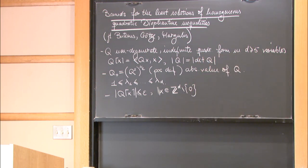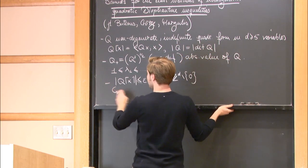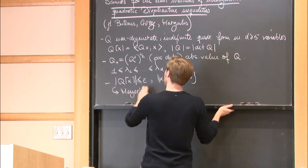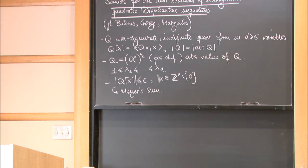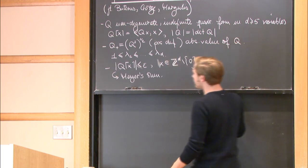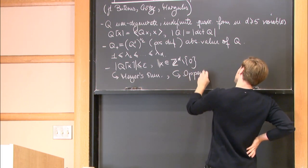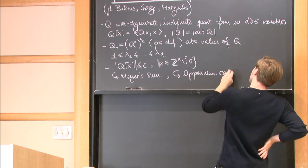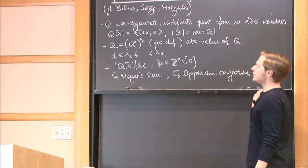The reason this question makes sense is in the integral case we have Meyer's theorem, which tells us that any indefinite integral quadratic form in d ≥ 5 variables represents 0 non-trivially. We also have the Oppenheim conjecture, which states that if Q is an irrational form in d ≥ 3 variables, then this admits a solution. So it makes sense to ask for the size of the least integral solution to such an equation.